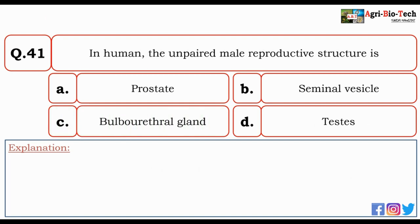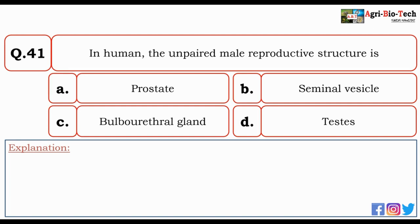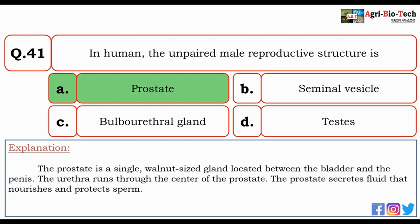Next question: in humans, the unpaired male reproductive structure is — prostate, seminal vesicle, bulbourethral gland, or testes? The correct answer is A — prostate. The prostate is a single walnut-sized gland located between the bladder and the penis. The urethra runs through the center of the prostate, and the prostate secretes fluid that nourishes and protects sperm.